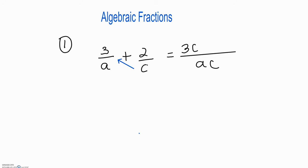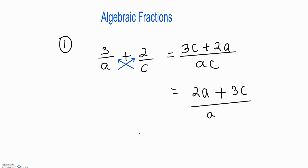Multiply a times two, which will give you 2a, and that is our answer. Or you could rearrange it to have 2a plus 3c over ac. So either of those could be correct.